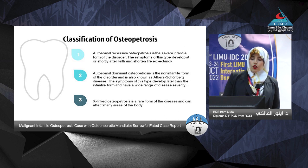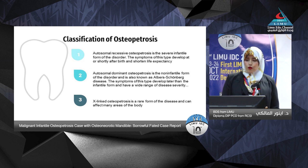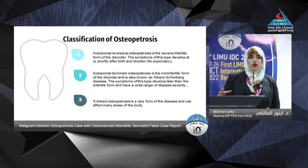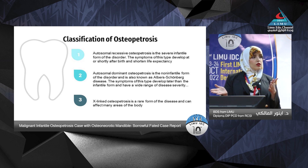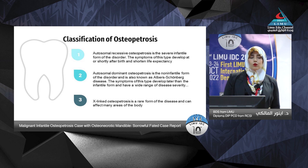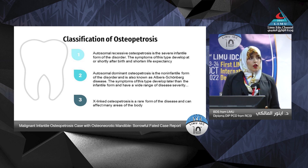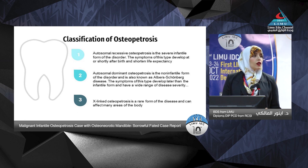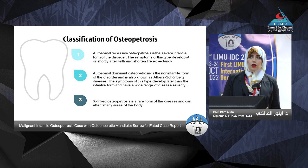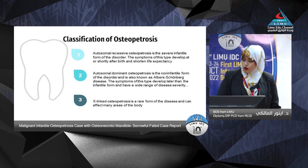The autosomal dominant type is the most common form. Symptoms range from mild to severe across individuals. The third type is X-linked osteopetrosis, which is a severe form usually affecting males, though females can be affected if both parents are carriers — this accounts for less than 1% of osteopetrosis cases.